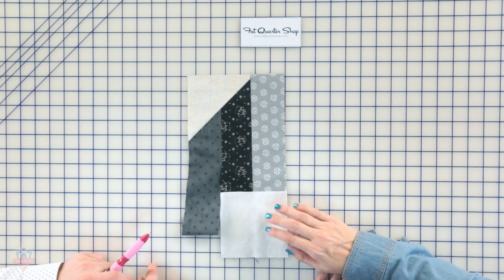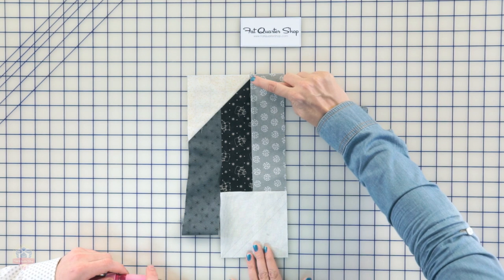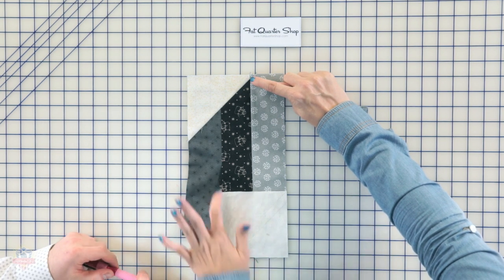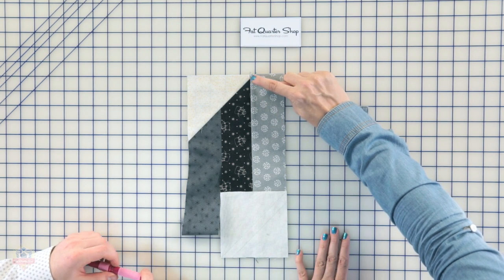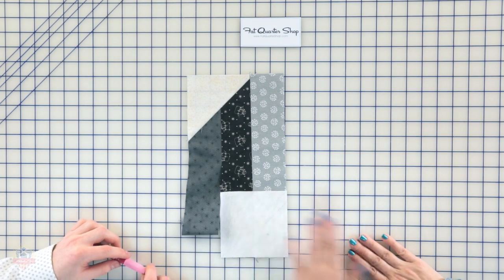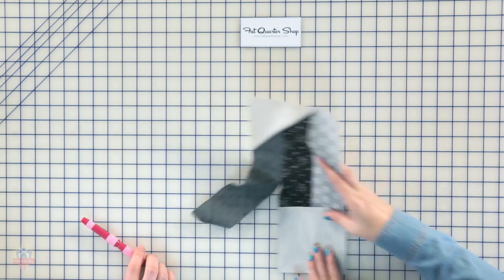I can see that with this method, you're getting that perfect point up here, whereas if you didn't do this partially, this might be off. Yeah, it kind of helps guarantee that quarter of an inch that you need.